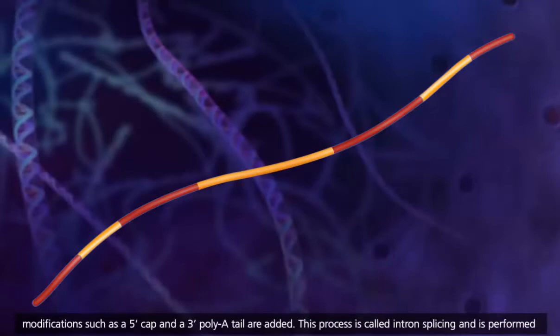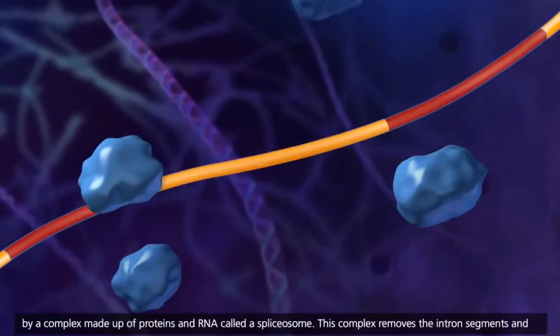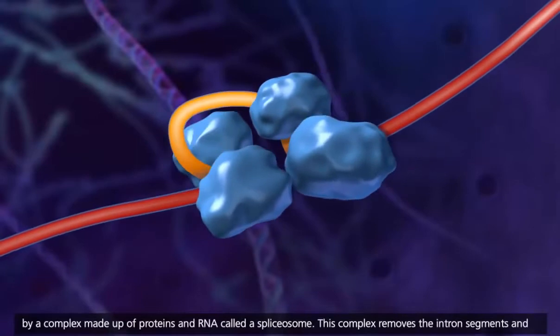and modifications such as a 5' cap and a 3' poly-A tail are added. This process is called intron splicing, and is performed by a complex made up of proteins and RNA called a spliceosome.